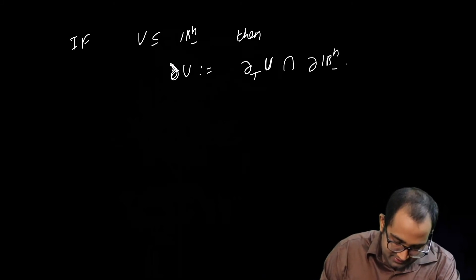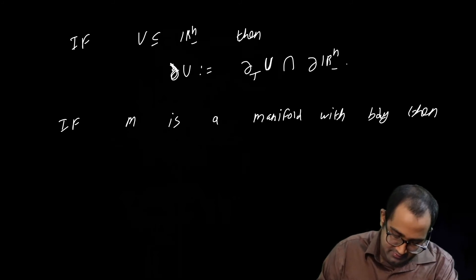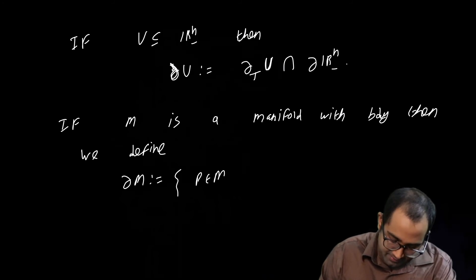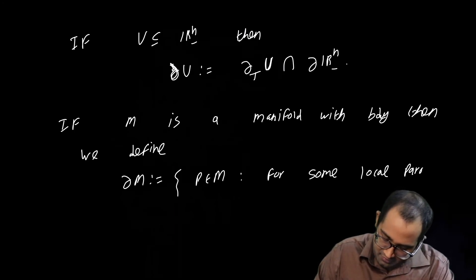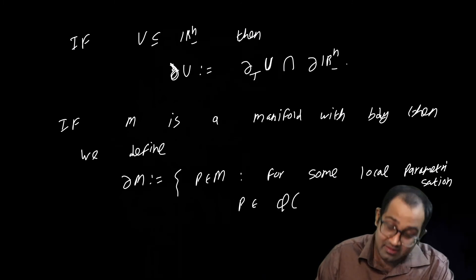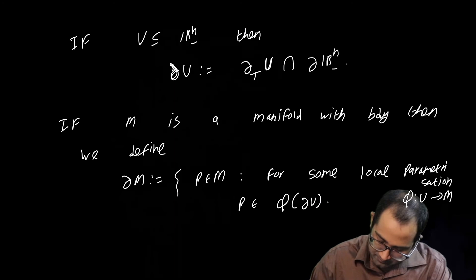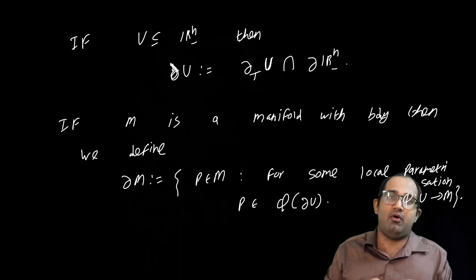We define: if M is a manifold with boundary, then the boundary of M is by definition those points P in M such that for some local parametrization phi from U to M, P is in the image of the boundary of U. So you collect together those points of the manifold with boundary which are the images of boundary points under phi, put them together in a set, and that is called the boundary of M.